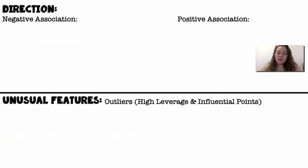Alright, so direction. A negative association. You read a graph just like you read a sentence from left to right. Alright, so if it's going down from left to right, then it has a negative association.